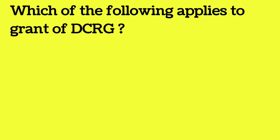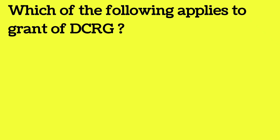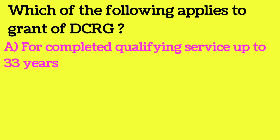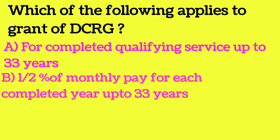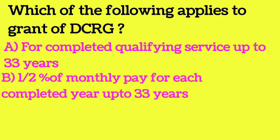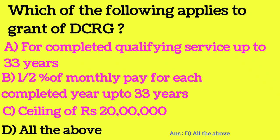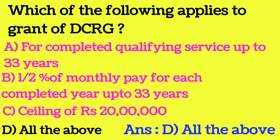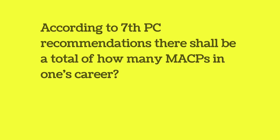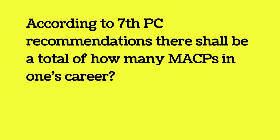Which of the following applies to the grant of DCRG (Death-cum-Retirement Gratuity)? Option A: for completed qualifying service up to 33 years. Option B: half percentage of monthly pay for each completed year up to 33 years. Option C: ceiling of Rs. 20 lakh. Option D: all of the above. The answer is all of the above, according to the 7th Pay Commission recommendation.